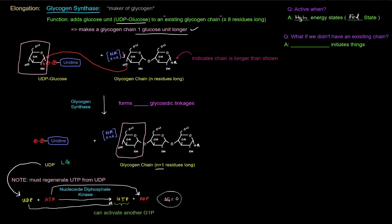So what's important though is that UTP that's formed can now activate another glucose 1-phosphate. And then we can go through and add another UDP glucose to the glycogen chain if we want to elongate it further. So that's basically glycogen synthase.